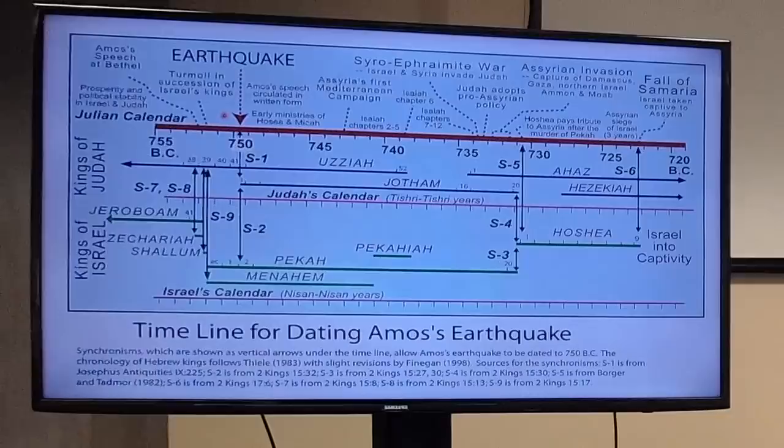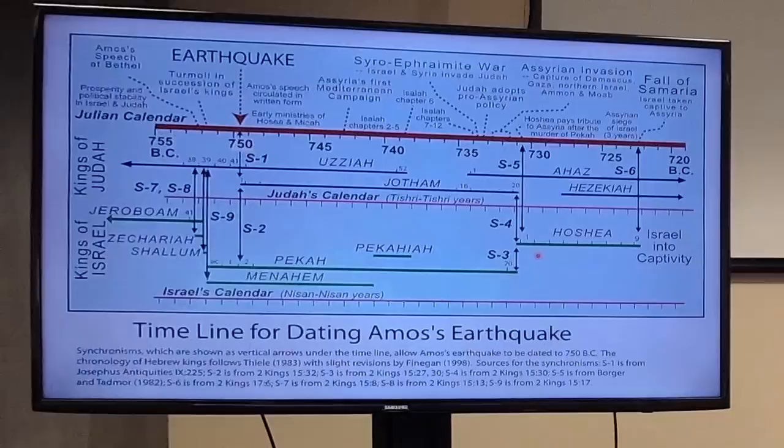Amos's earthquake sits at about 750 to 760 B.C. After it, there was turmoil in the succession of kings. Less than 30 years later, there was the last king of Israel, Hosea, and then Israel went into captivity in 723 B.C.